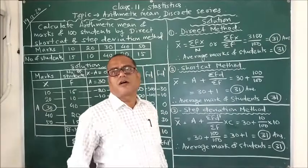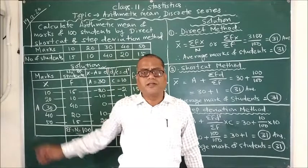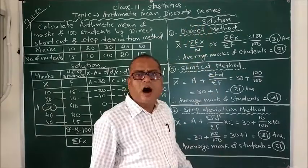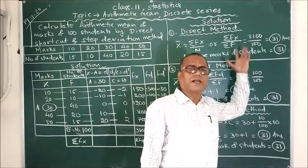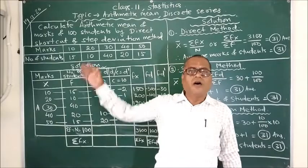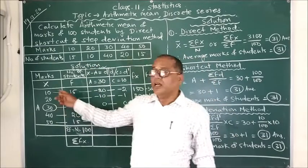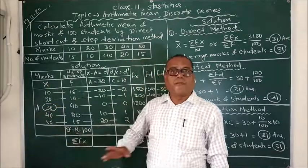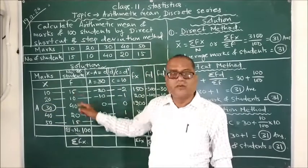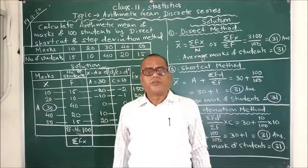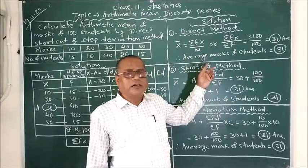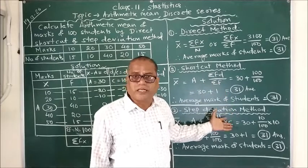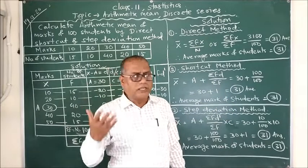The arithmetic mean or the average mark of 100 students is 31. These are the ways how we find using different methods the arithmetic mean of a discrete series, which is a grouped data where along with the values their frequency is also given. In our next class we will discuss how to calculate arithmetic mean in a continuous series.